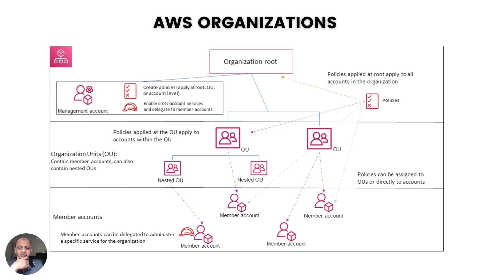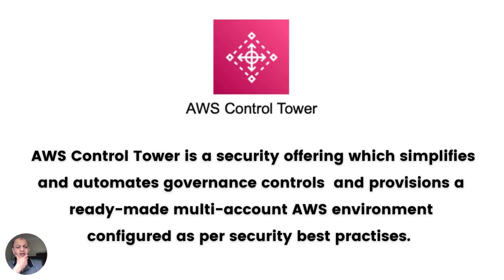AWS Organizations is still a very good tool — it's amazing — but it still requires a lot of manual work to accomplish, which is where AWS Control Tower comes in. That's why I've made this AWS Control Tower tutorial, just to teach you all, because it's still relatively new. Simply put, it's a new security offering which simplifies and automates governance controls, and most importantly, it provisions a ready-made multi-account AWS environment already configured as per security best practices. It's the quickest and easiest way to set up and secure a multi-account AWS environment — usually called a landing zone.